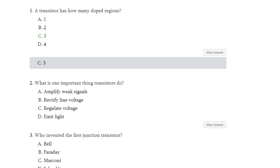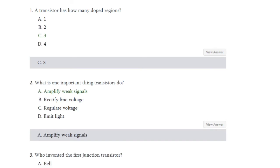Welcome students. This is the third part of Basic Electronics important MCQs. Unit 3 is Bipolar Junction Transistor. Question number 1: A transistor has how many doped regions? Options are 1, 2, 3, 4. The answer is C — that is three doped regions. Question number 2: What is one important thing transistors do? First is amplify weak signals, second is rectify line voltage, third is regulate voltage, and fourth is emit light. The answer is first — amplify weak signals.